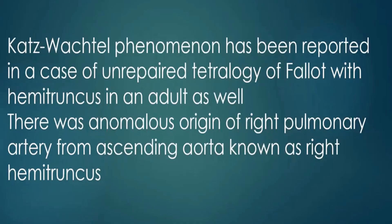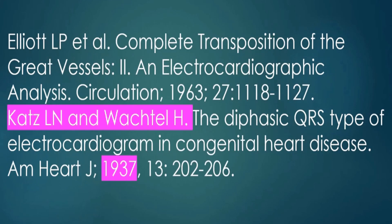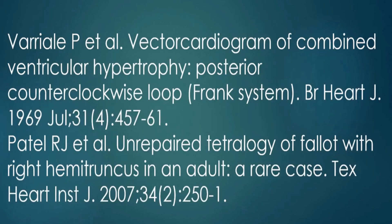The Katz-Wachtel Phenomenon has also been reported in a case of unrepaired Tetralogy of Fallot with hemi-truncus in an adult. There was anomalous origin of the right pulmonary artery from the ascending aorta, known as right hemi-truncus. References including the original publication from Katz and Wachtel are provided here, along with a few more references for the topic.